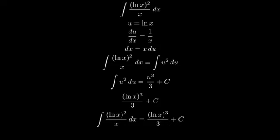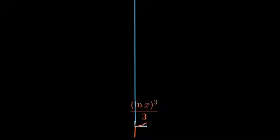Let's visualize this solution graphically. Here's the graph of y equals ln x squared over x, which is our integrand. And here's the graph of y equals ln x cubed over 3, which is our antiderivative. Notice how the antiderivative grows more rapidly than the original function, as we would expect from integration.